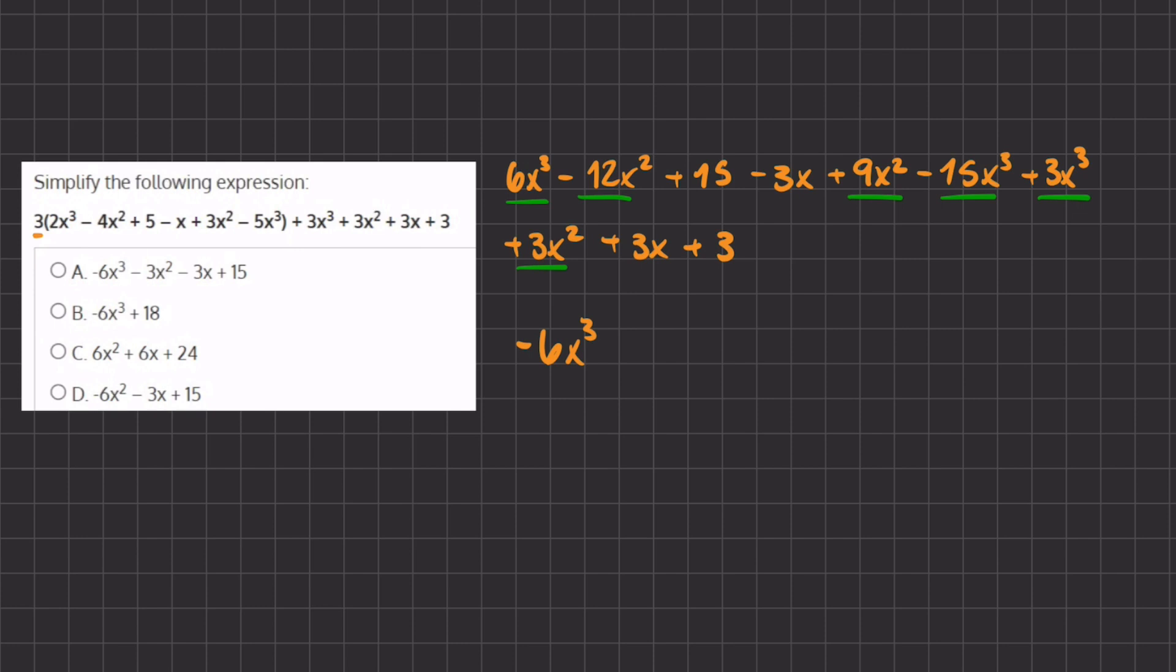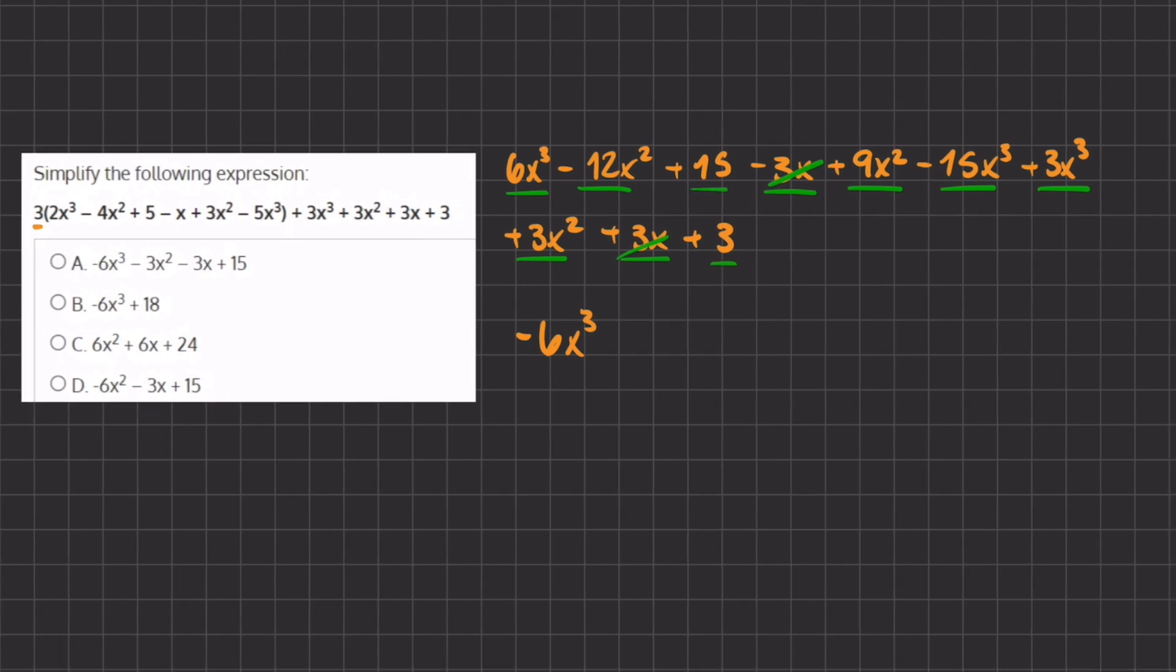So we don't have to write that one. Now let's move on to our x's, we have negative 3x and we have a positive 3x. So these two are also going to be canceling out, and now we are left with only our numbers. So here we have 15 and 3, so we are going to be adding those together, and we get a positive 18.